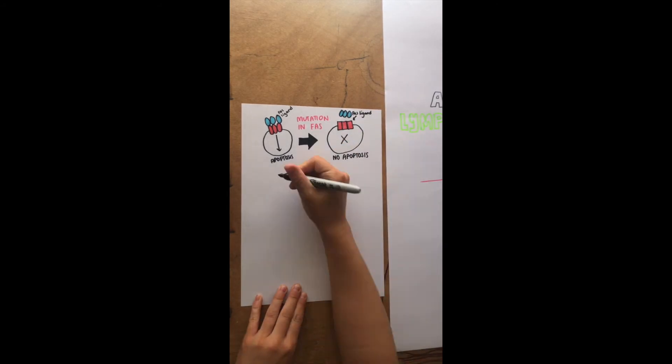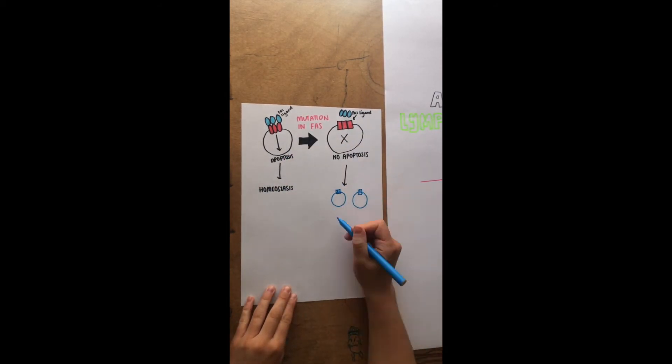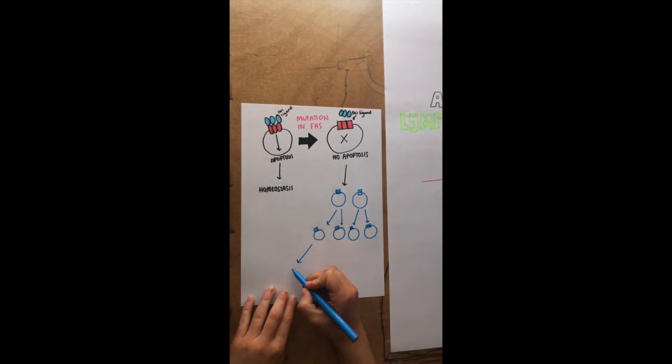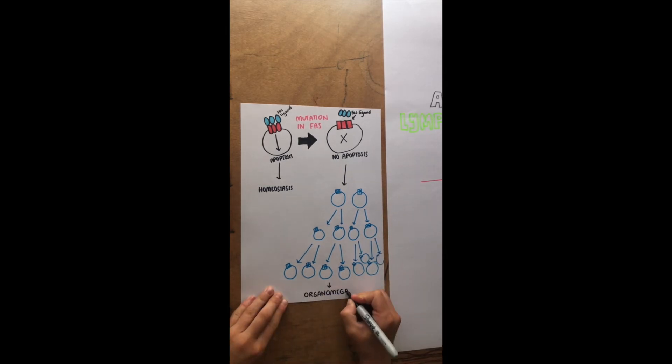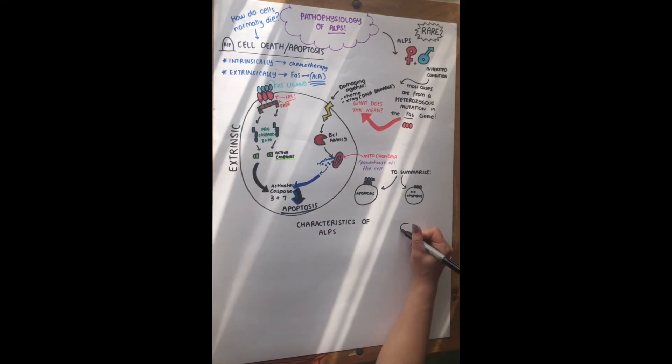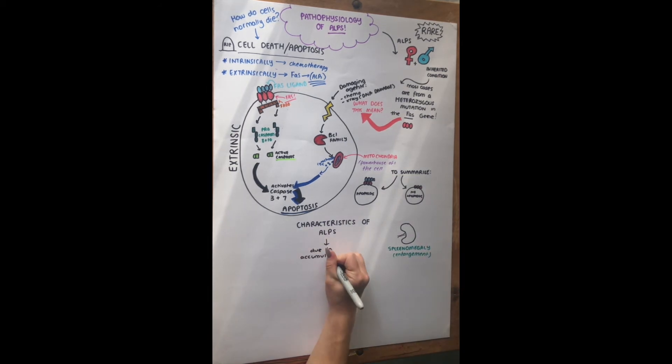So the characteristics of ALPS, now we're going to talk about how this mutation actually causes the symptoms in a person with ALPS. So as I'm writing now, it's due to accumulation of lymphocytes and autoimmunity. So firstly, here I've got splenomegaly. So -megaly usually means enlargement, and obviously it's enlargement of the spleen, so if you ever hear a doctor say that, that's what that means. And we've also got hepatosplenomegaly, which is both the spleen and the liver. And the reason why these organs are common is because they usually are involved with white blood cells.